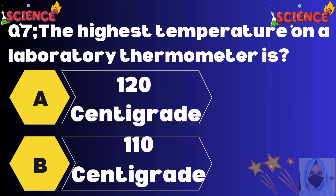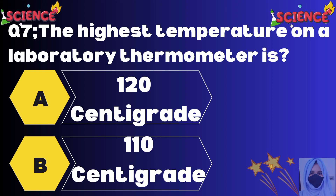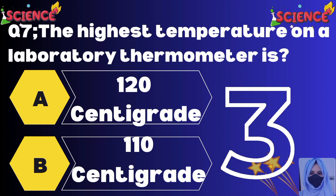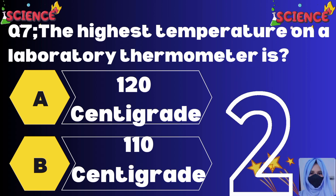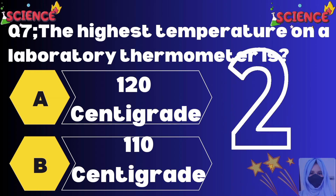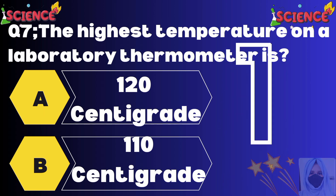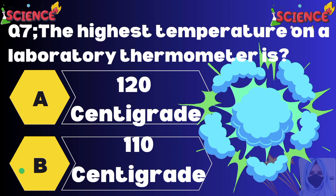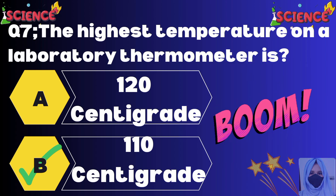The highest temperature on a laboratory thermometer is: option A 120 centigrade, option B 110 centigrade. The correct answer is option B, 110 centigrade.